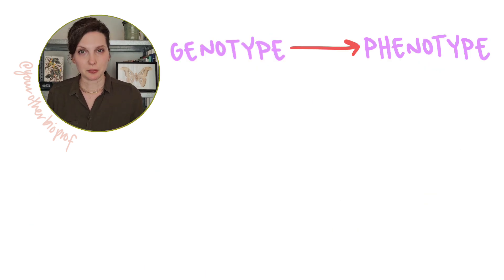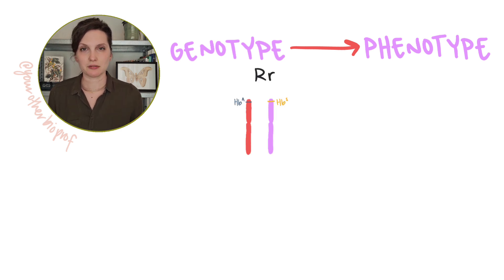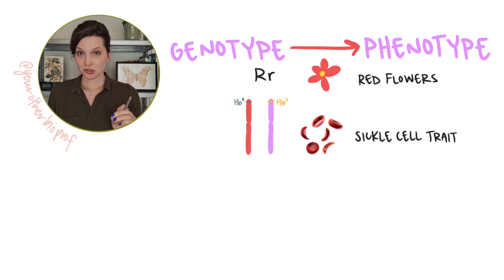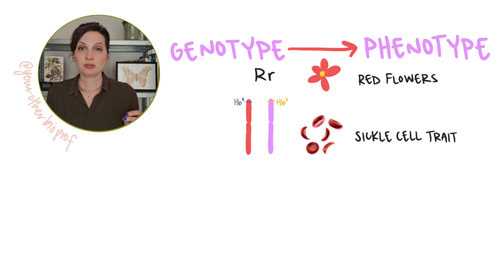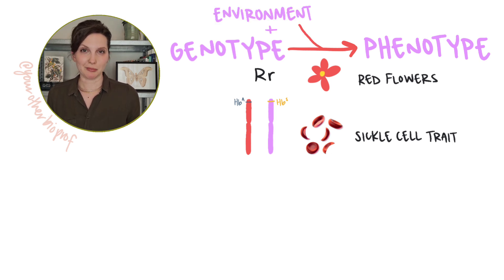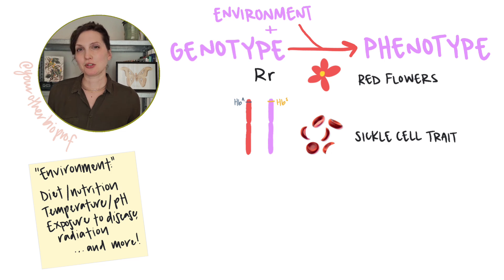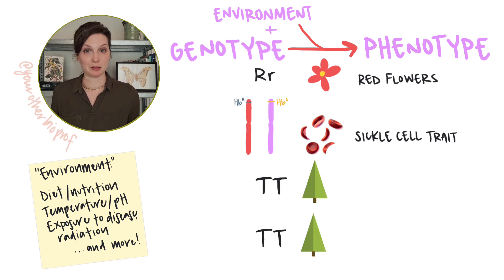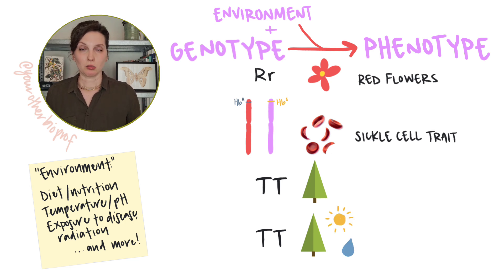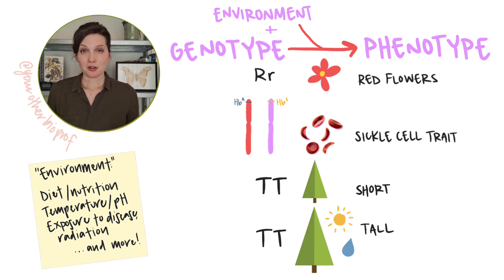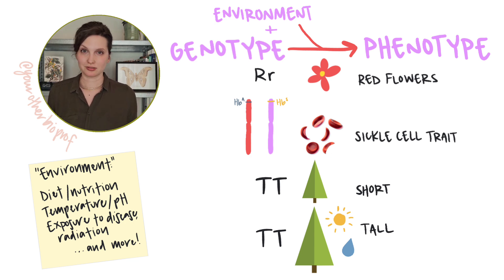The genotype can influence the phenotype — what's on the DNA can influence how that characteristic is observed. But how much the genotype influences the phenotype depends. An individual's environment can also play a role in impacting phenotype. For example, think about two genetically identical trees — same genotype — but one tree is given more sunlight and more nutrients. Even though their genotypes are the same, only one of them is going to grow to its full height potential.